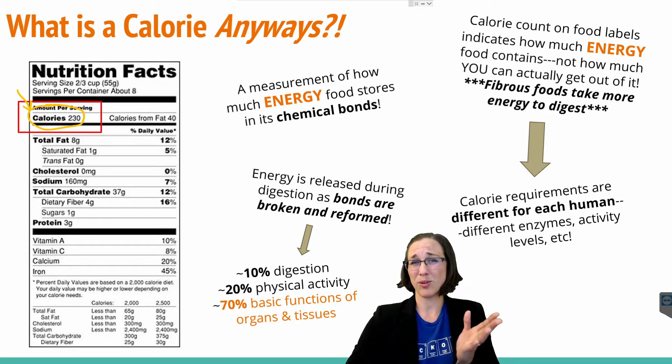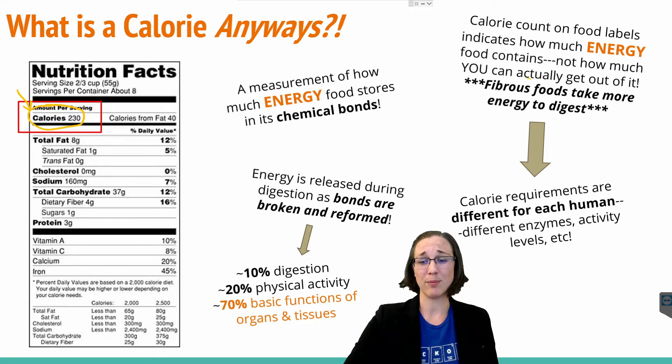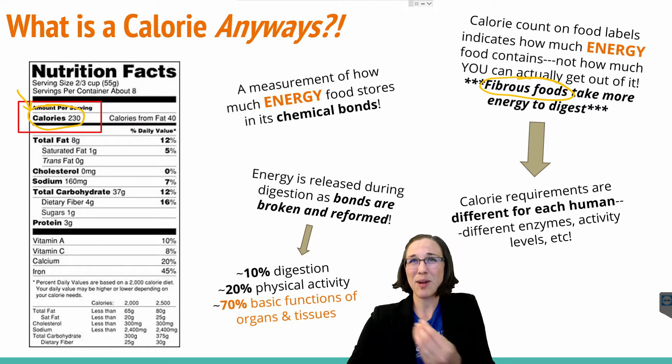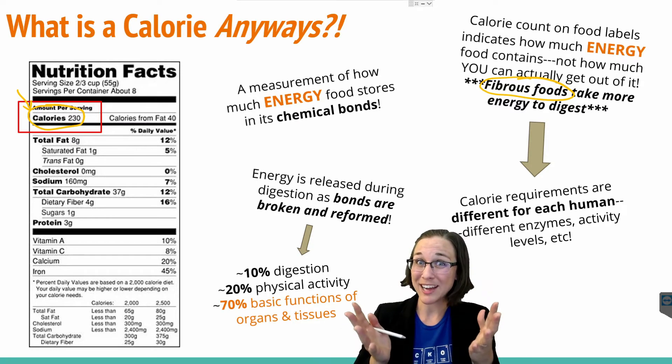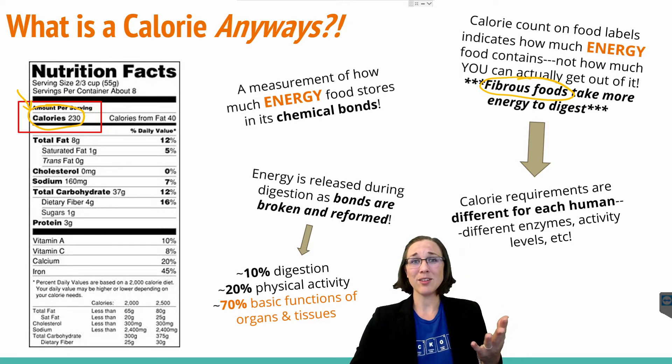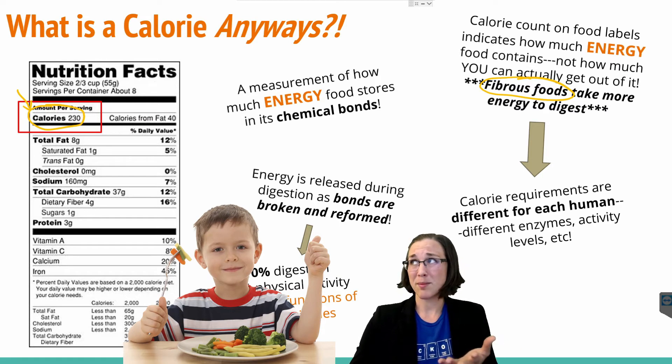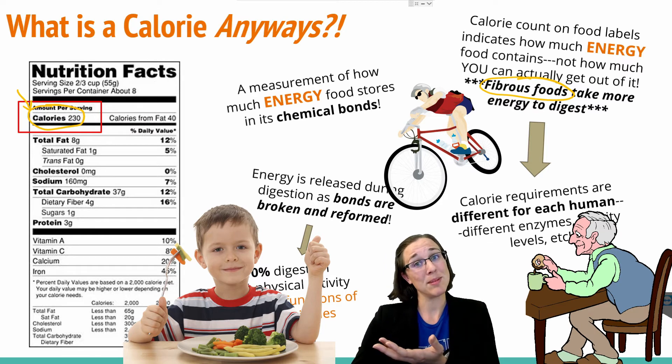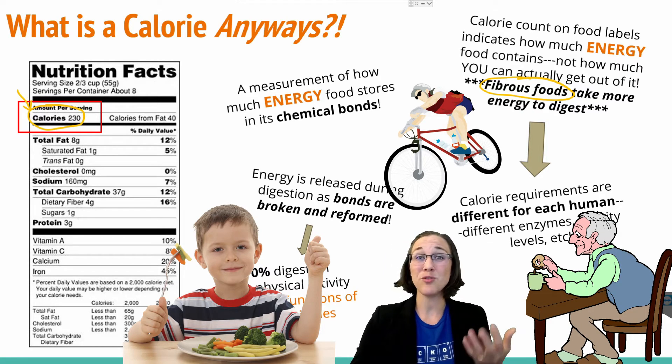Keep in mind that the calorie count on the food labels indicates how much energy is stored in the chemical bonds, but not how much energy you can actually get out of it. So for example, if you were going to eat celery, that's a more fibrous food, it would take you more energy to digest the fibrous food than you actually get out of it. Because your body is literally a chemical reaction here. And also keep in mind that the calorie requirements are different for each human being. We all have different metabolisms, different enzymes, and different activity levels. So the amount of calories that a toddler needs or somebody doing a cross-country tour on a bicycle versus somebody who's elderly and metabolism is lower is going to vary greatly.